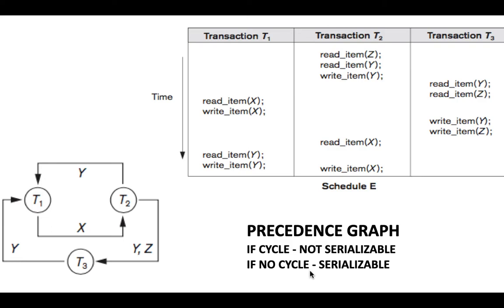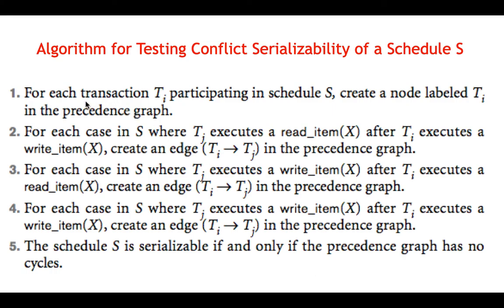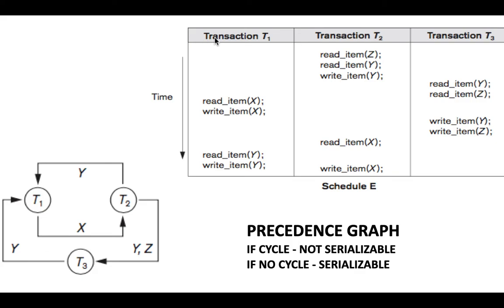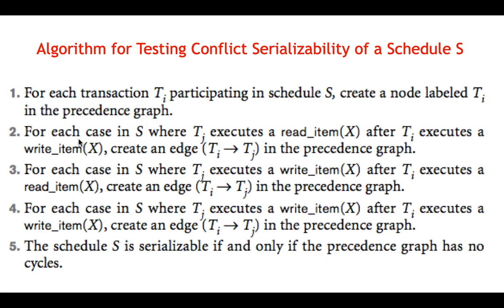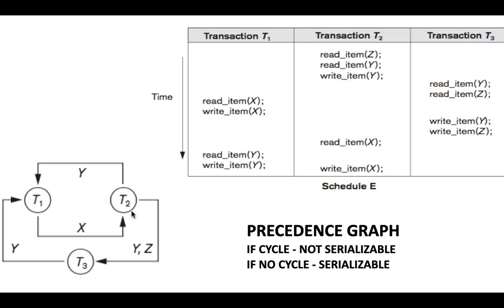Now let's look at the standard algorithm. Step 1: for each transaction TI participating in the schedule, create a node labeled TI in the precedence graph. We had T1, T2, T3, so we constructed three nodes. Step 2: for each case where TJ executes read X after TI executes write X, create an edge from TI to TJ.